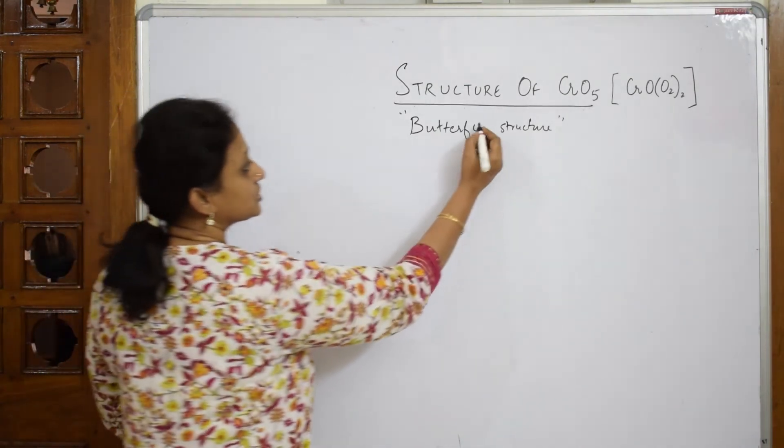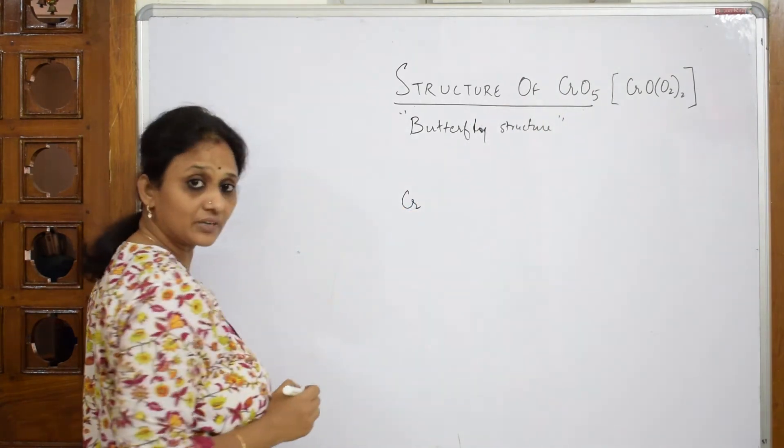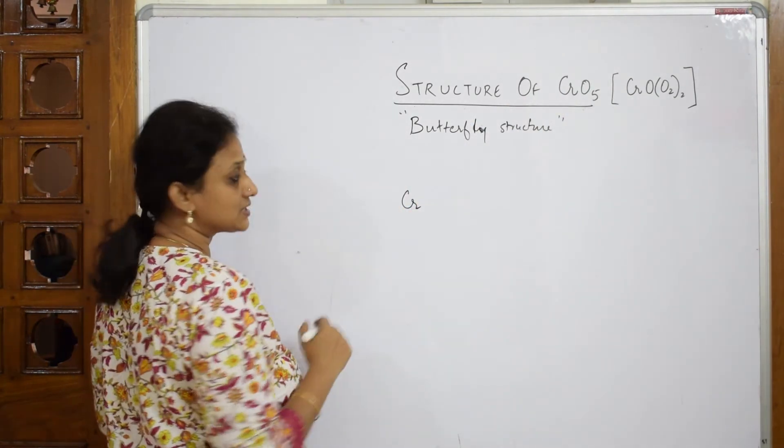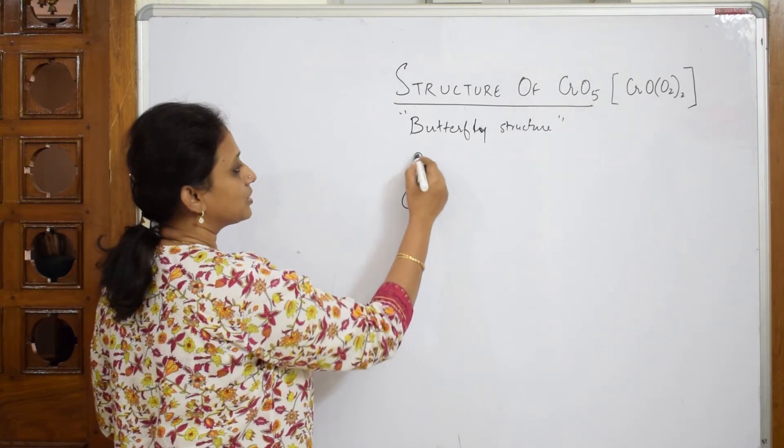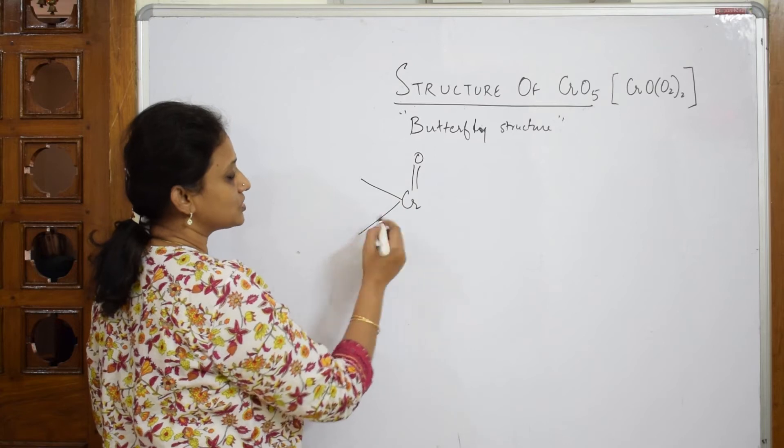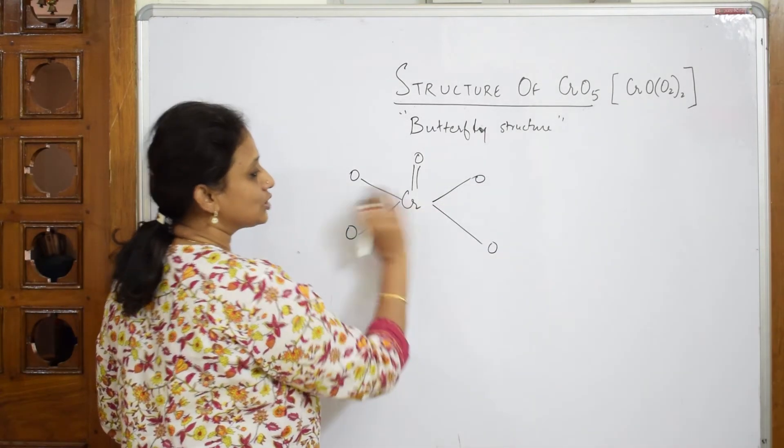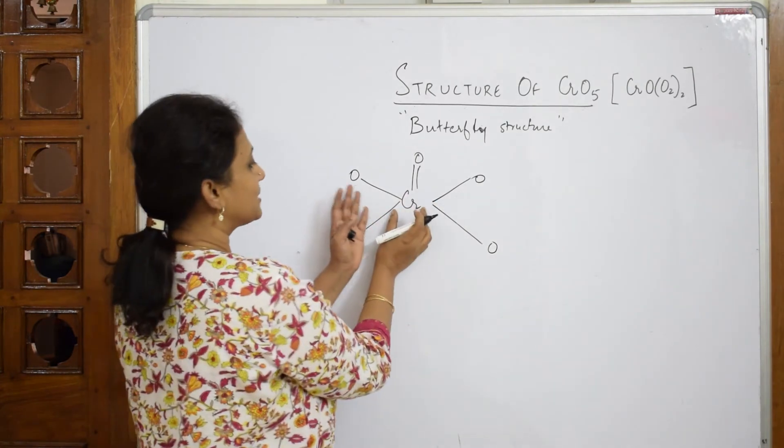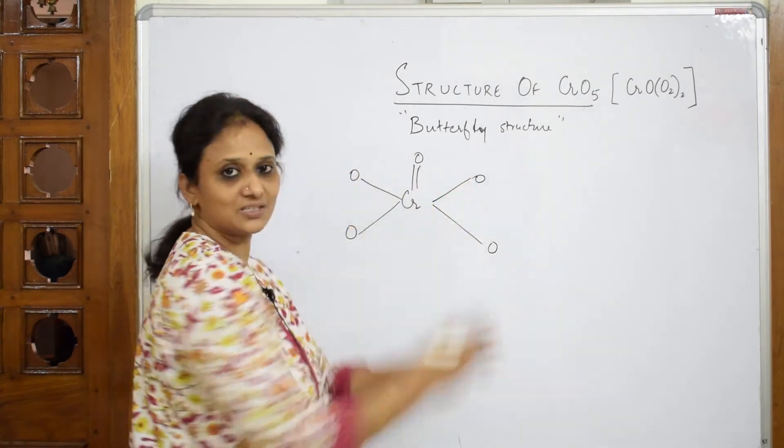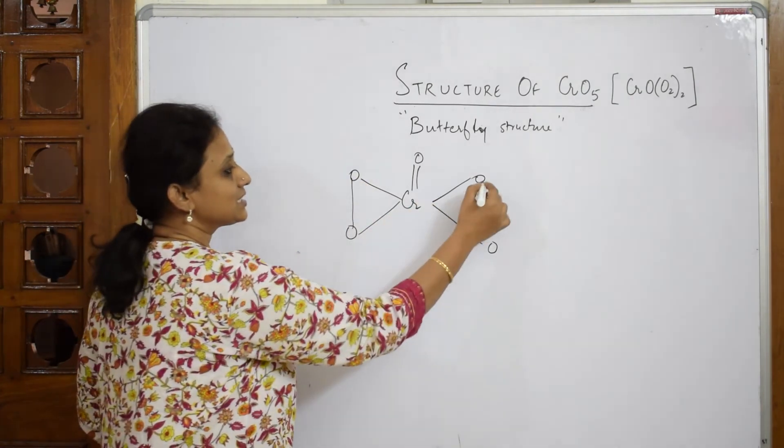CrO₅ structure: most important thing, your chromium is in the center. Your five oxygens - the first forms a double bond. Now we have four more: one oxygen here, one oxygen here, the other oxygen here, another oxygen. Isn't it looking like a butterfly - the bottom center and two wings? That's why we call it a butterfly structure. These two are linked and these two are linked.